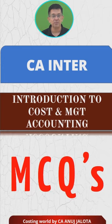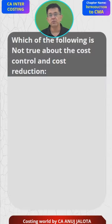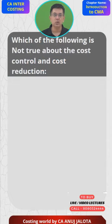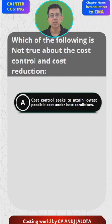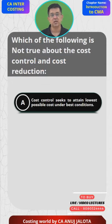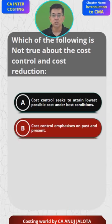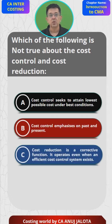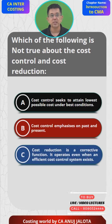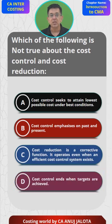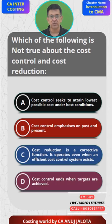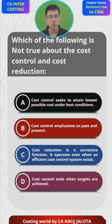Let's do this. Which of the following is not true about cost control and cost reduction? The four options are: A) Cost control seeks to attain the lowest possible cost under best conditions. B) Cost control emphasizes on past and present. C) Cost reduction is a corrective function — it operates even when an efficient cost control system exists. D) Cost control ends when targets are achieved.